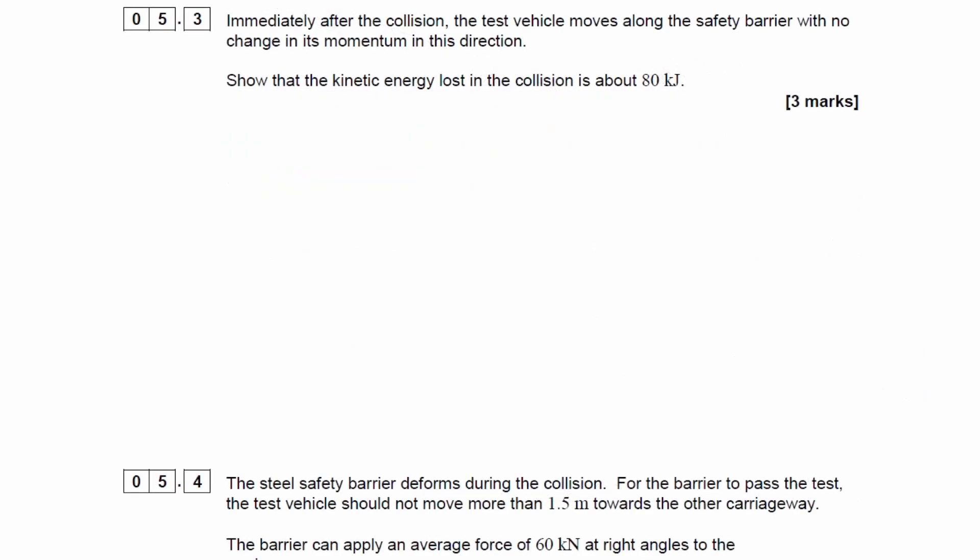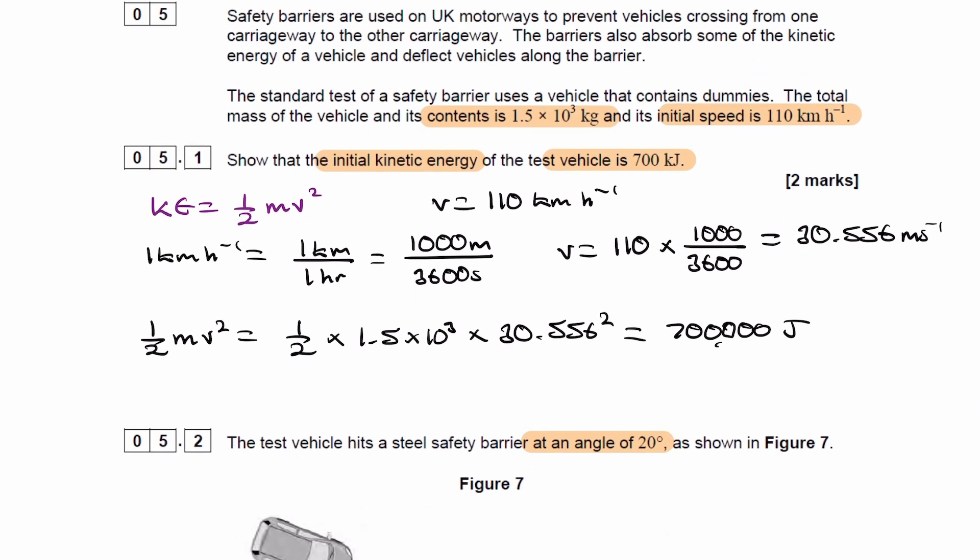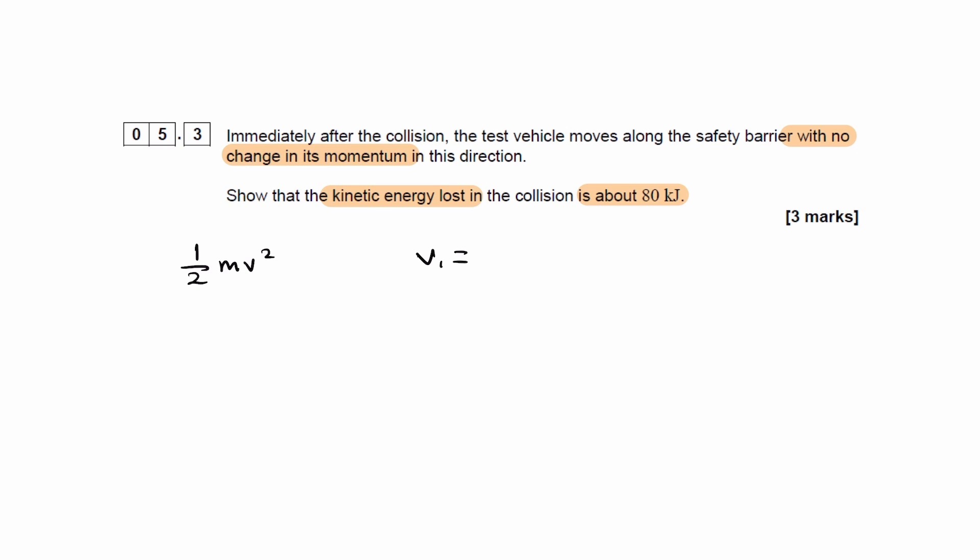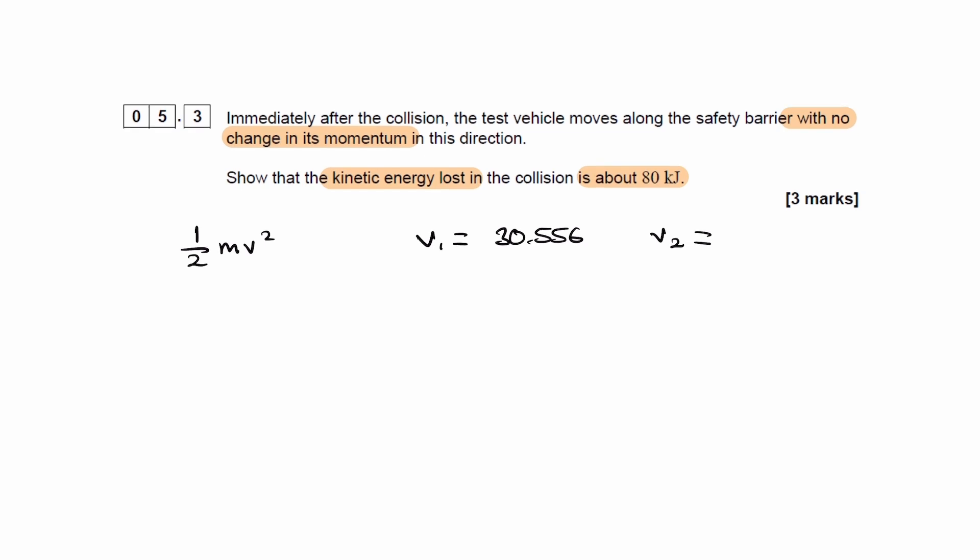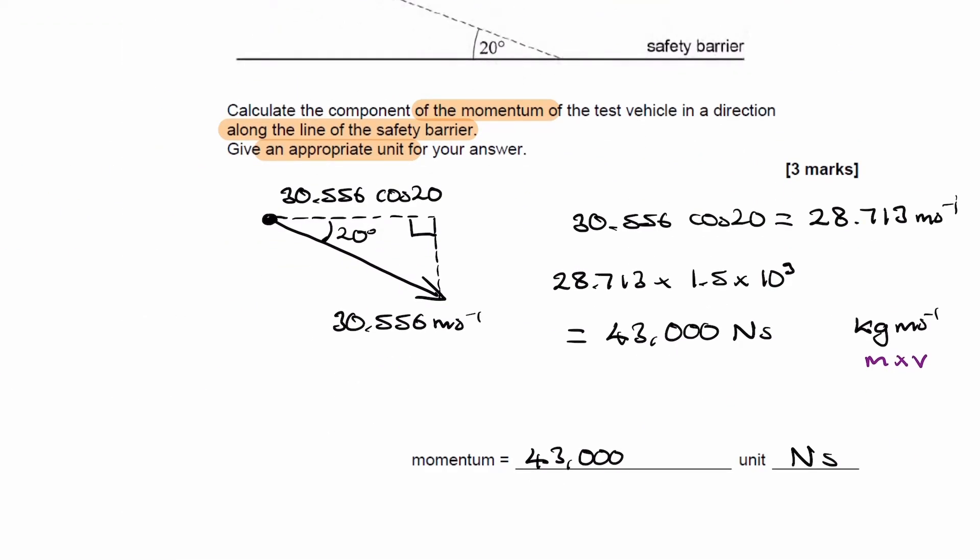For 5.3, immediately after the collision, the test vehicle moves along the safety barrier with no change in momentum in this direction. We're trying to show that the kinetic energy lost is about 80,000 joules. So we want to use half mv squared. The initial velocity v1 was the 30.556 that we worked out before. And then the new velocity, when it moves along the barrier, we worked that out to be 28.713.